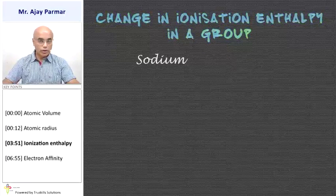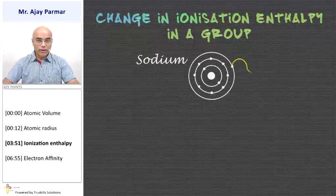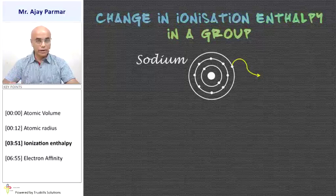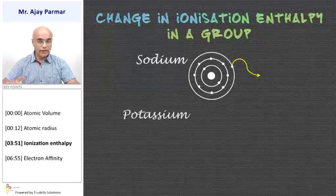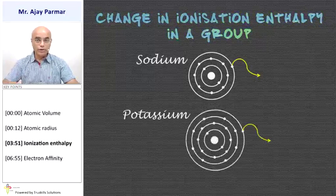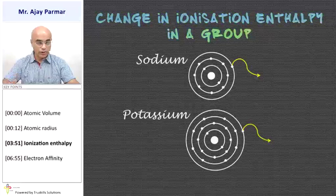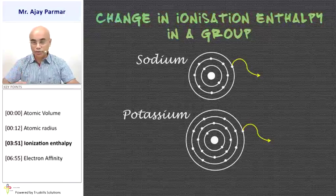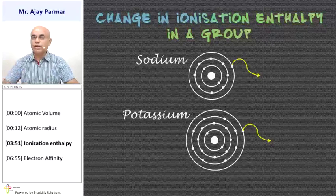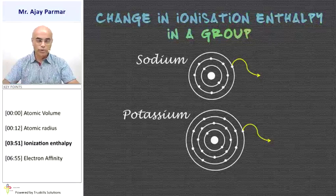For example, in sodium, a member of the first group, this atom has got the third orbit as the outermost orbit and it has to lose the outermost electron. Whereas the next element in the group, that is potassium, has the fourth orbit as the outermost orbit. Because of that, the atomic radius increases, so the attraction between the nucleus and the outermost electron will be slightly less, and it can lose that outermost electron much more easily. So potassium is more reactive than sodium.